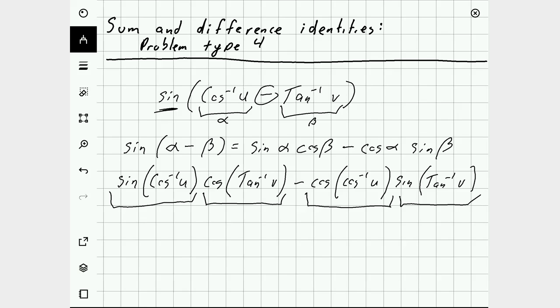Starting off with the inverse cosine. If I draw a triangle, a right triangle, and I put angle alpha here, cosine is adjacent over hypotenuse.